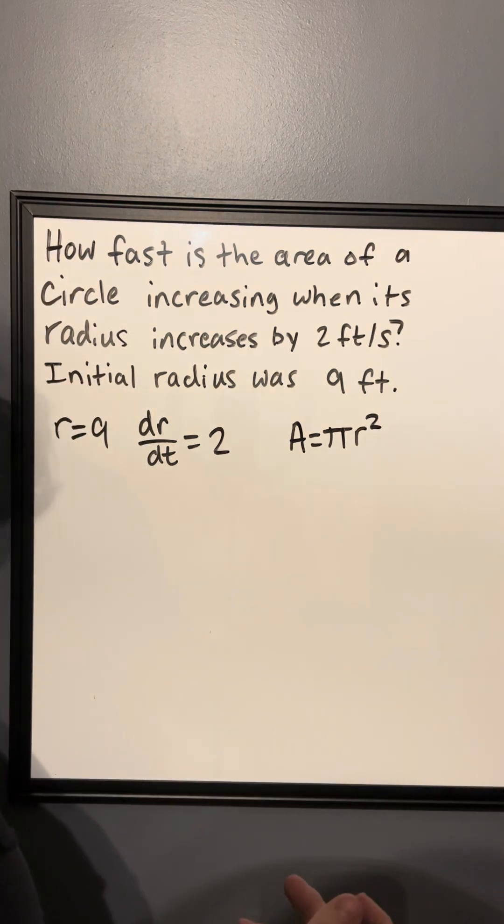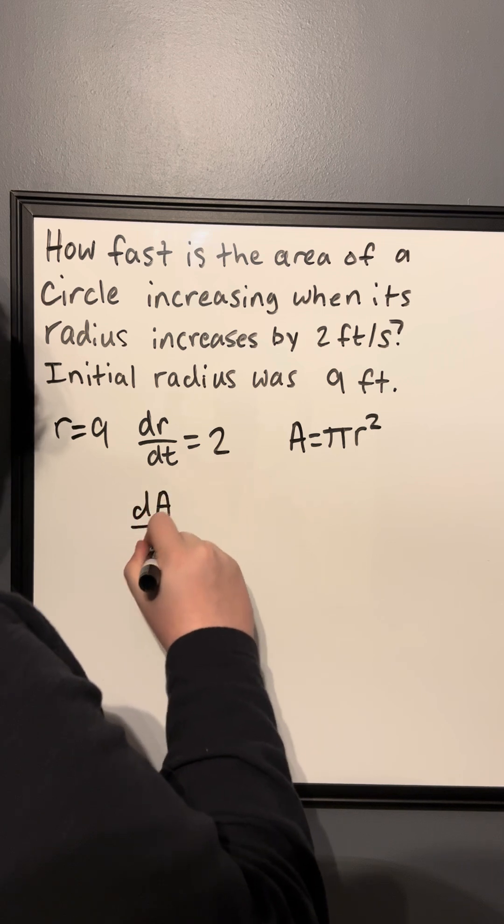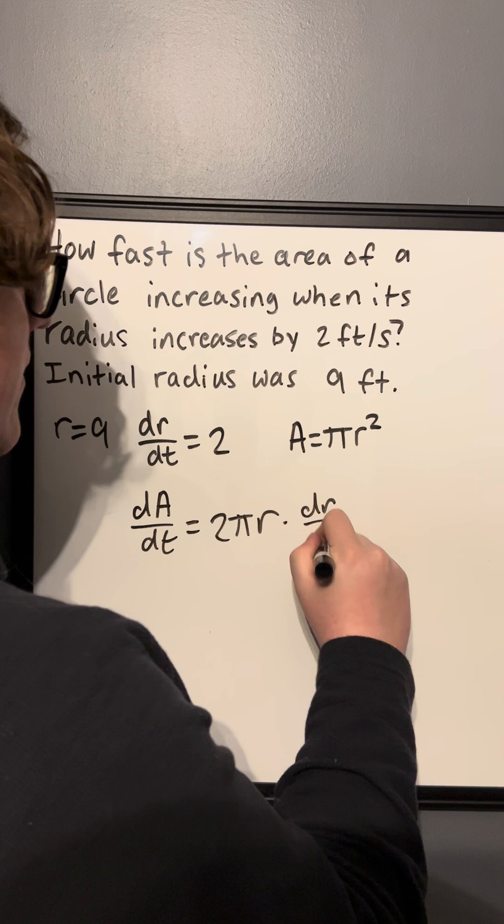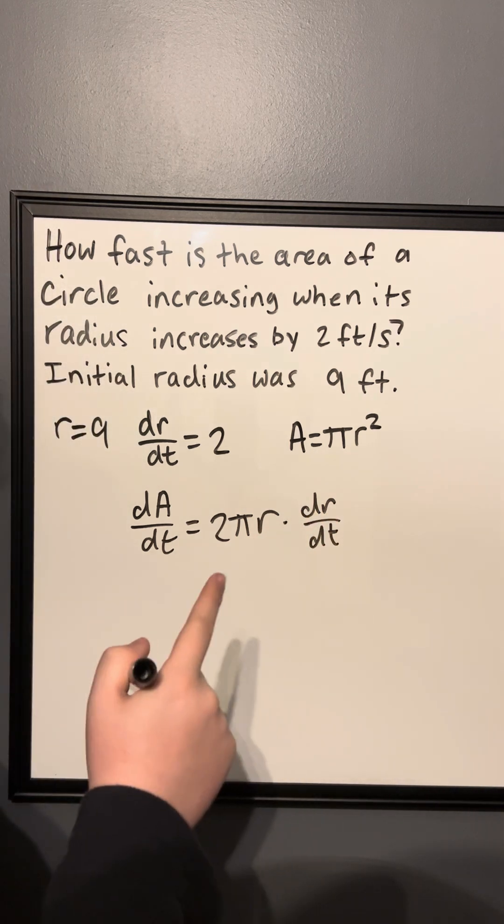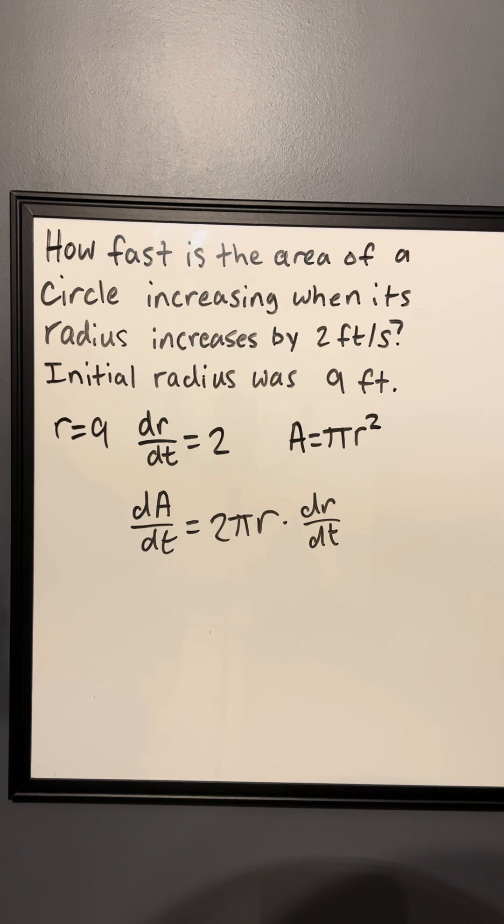So to find the change in area, we need to take the derivative of this. So that's going to give us dA/dt equals 2πr times dr/dt. We need the dr/dt because we took the derivative with respect to t, and r is a different variable. So this is implicit differentiation.